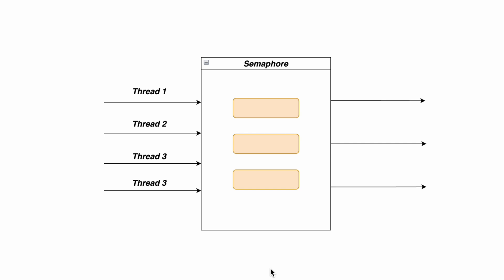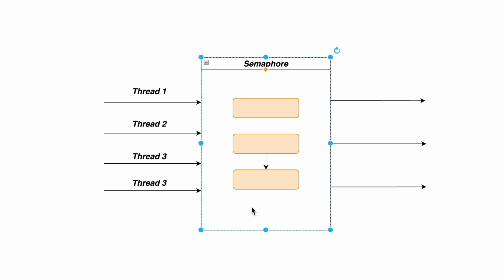Let's start with the assumption that a semaphore at its core is nothing but a permit mechanism. The image shown has three boxes, and these three boxes are nothing but permits. So at the moment, this semaphore is going to allow three threads to run. If a thread wants to execute, it will ask the semaphore for permission. The semaphore will check whether it has any permit available, and if there is a permit, that permit will be given to the thread — like a token — and once the thread acquires it, it proceeds with its processing.